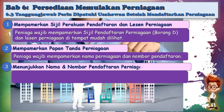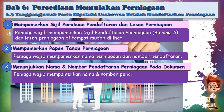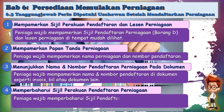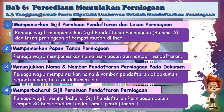Yang ketiga, usahawan perlu menunjukkan nama dan nombor pendaftaran perniagaan pada dokumen. Peniaga wajib mempamerkan nama dan nombor pendaftaran di dokumen seperti invoice, bil, ataupun dokumen-dokumen yang berkaitan. Yang keempat, usahawan perlu memperbaharui sijil perakuan pendaftaran perniagaan. Peniaga wajib merenew sijil pendaftaran perniagaan dalam tempoh 30 hari sebelum tarikh tamat pendaftaran, menggunakan borang E1 — bermaksud selepas setahun berniaga, usahawan perlu memperbaharui sijil.